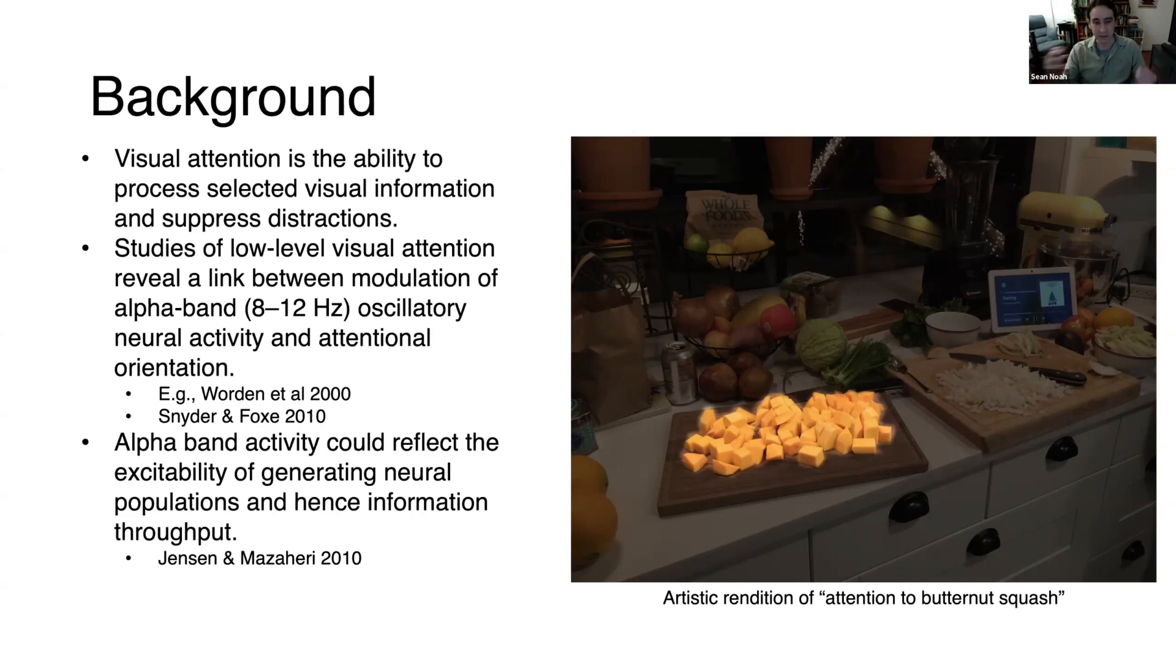For example, if you're attending to the left side of visual space covertly, then you see a concomitant drop in alpha power over the right visual hemisphere, which is the visual area that receives signals from the left visual field relative to the left visual hemisphere. One study has shown an analogous modulation of alpha power in a task that directed participants to attend to slightly higher level visual features like motion and color.